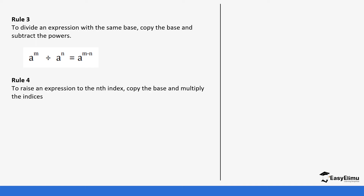Rule number four: to raise an expression to the nth index, you copy the base and multiply the indices. So for example, a power m, all raised to power n, is the same as a power m times n. If you open a bracket where a is raised to m and then you raise that whole thing to n, the indices are what get multiplied. Let's try to put these rules into practice.